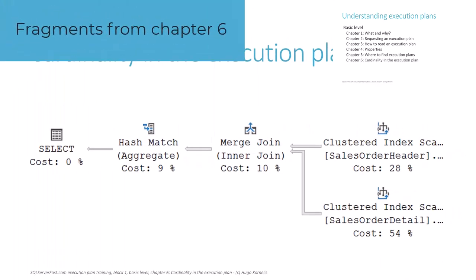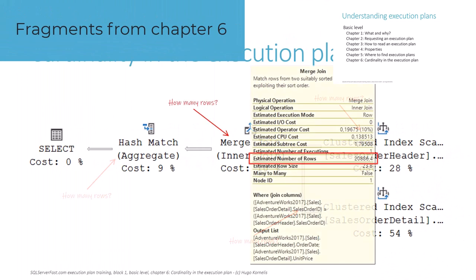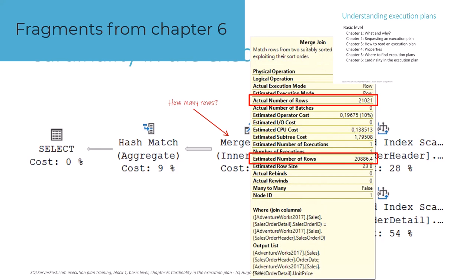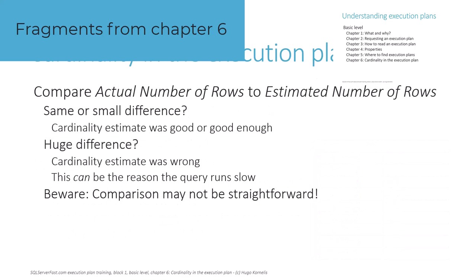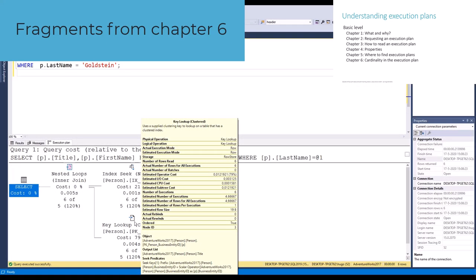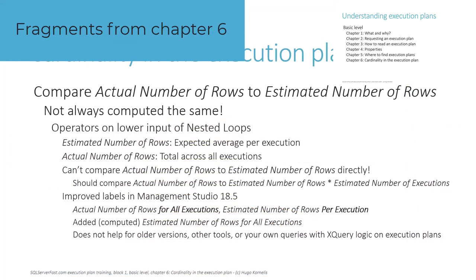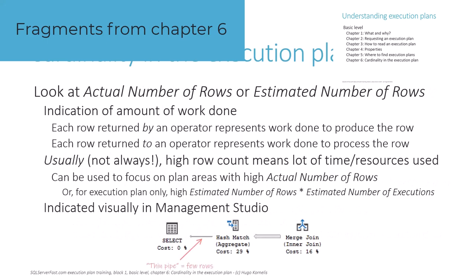A lot of performance issues that can be found with execution plans are related to bad cardinality estimates. The optimizer expects that a certain number of rows will match the query criteria and bases its decisions on that assumption. If those estimated numbers are totally different from the actuals, then the optimizer likely made bad decisions. That's why chapter 6 provides extensive coverage of the perhaps most important properties you can find in execution plans: the estimated and actual number of rows. We talk about their importance, but also about the many cases where the numbers may be presented in potentially confusing ways.